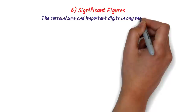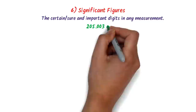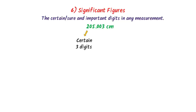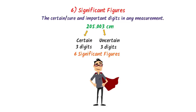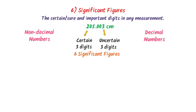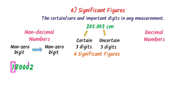The seventh topic is significant figures. The certain, sure, and important digits in any measurement are called significant figures. For non-decimal numbers, go from the first non-zero digit to the last non-zero digit. For example, in one number the first non-zero digit is 1 and the last non-zero digit is 2, giving 6 digits total — so there are 6 significant figures. In another number with first non-zero digit 4 and last non-zero digit 5, there are 3 significant figures.